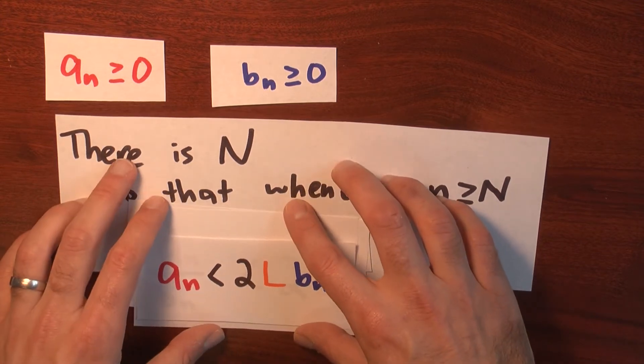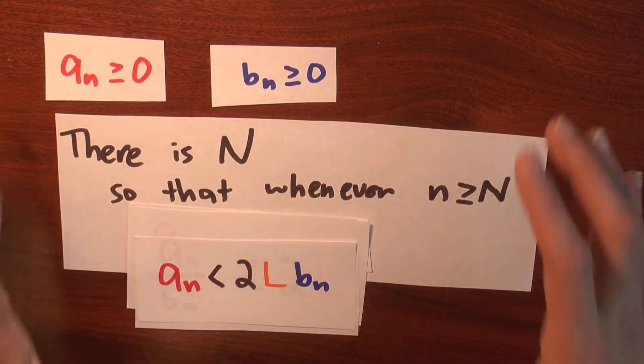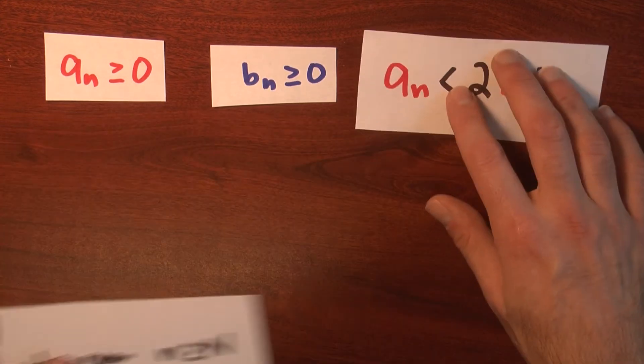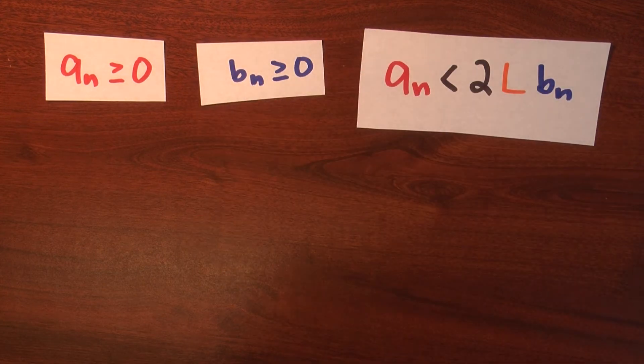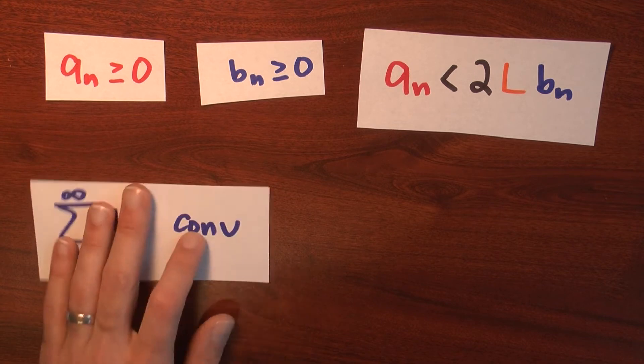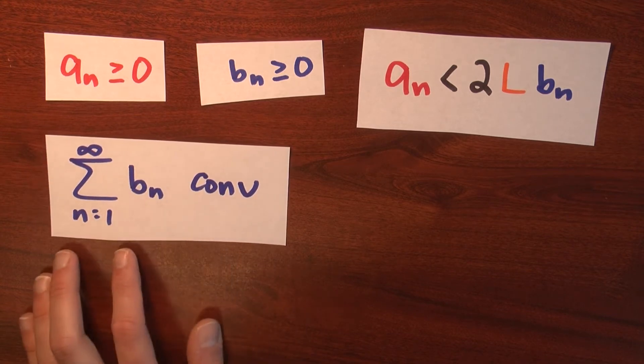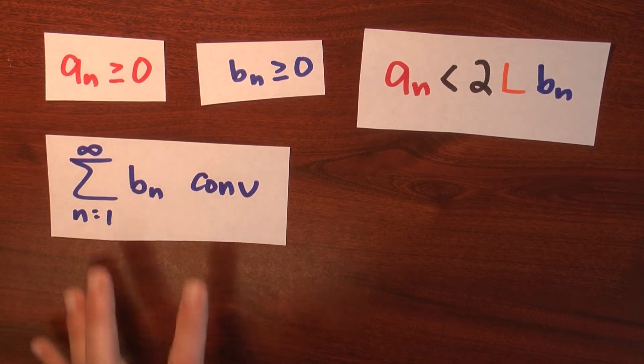Now all these pieces are really setting up a comparison test. How is that going to work? I've got to remember this is only true for large n, but that's okay.